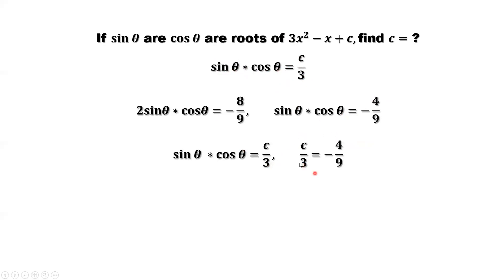Solve this equation for c. Both sides times 3. 3 and 9 cancel to 3. Here should be negative 4 over 3. C equals negative 4 over 3 is our answer.